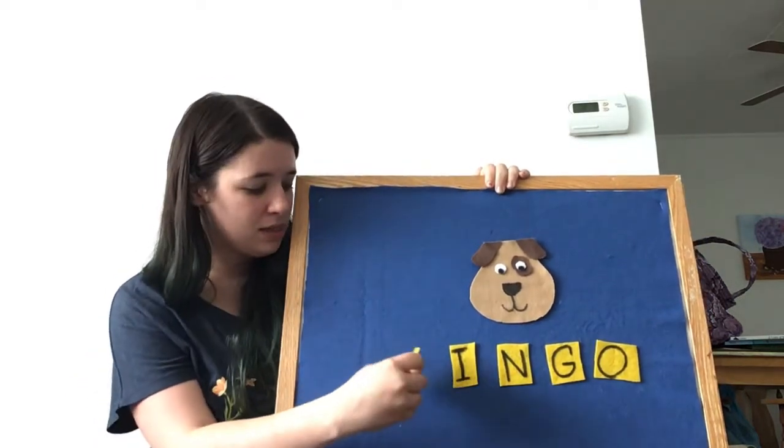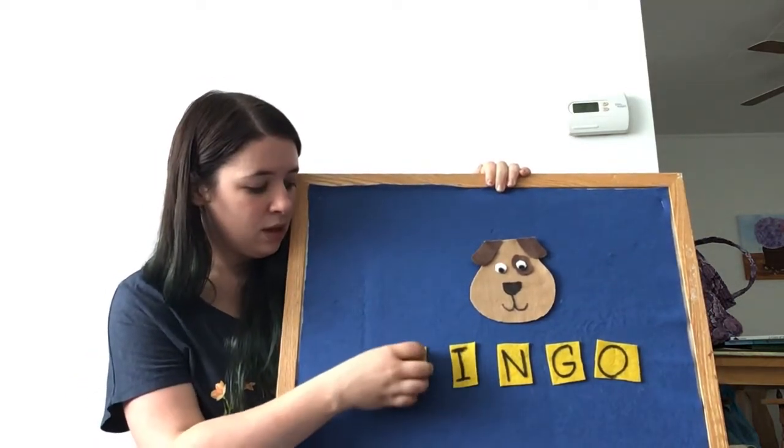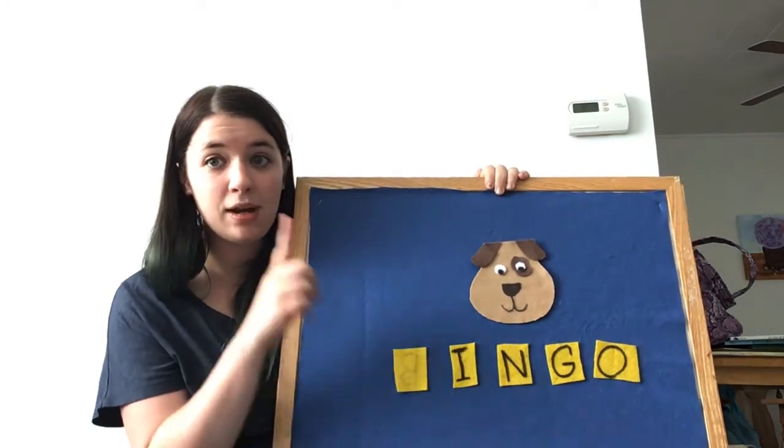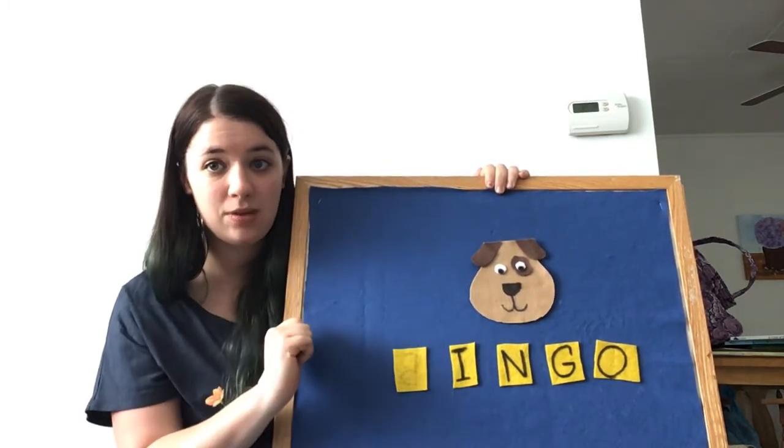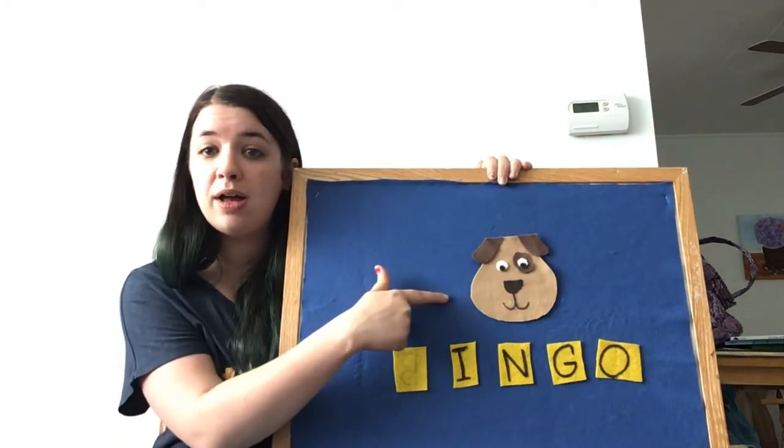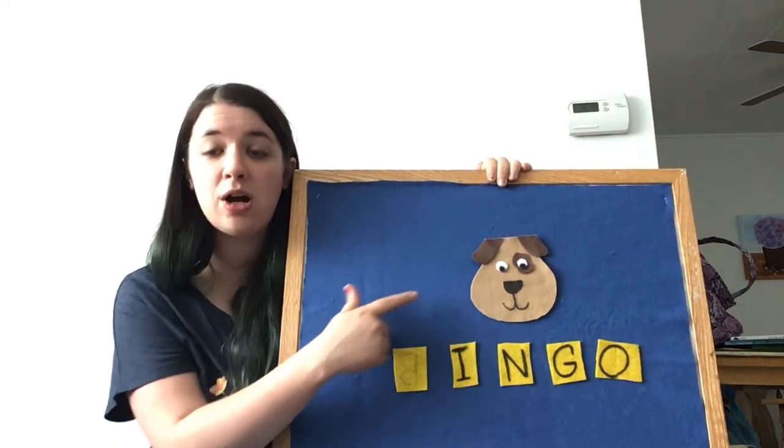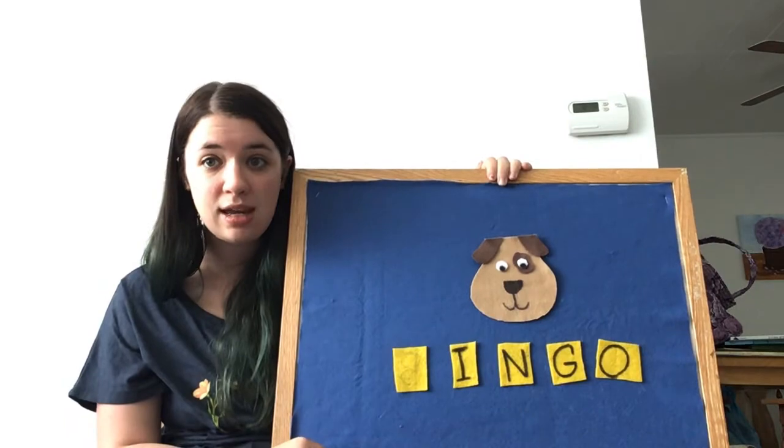This time, we're going to take away the B. And instead of saying B, we're going to say shh, because we can't see it anymore. Ready? There was a farmer who had a dog, and bingo was his name. Oh.